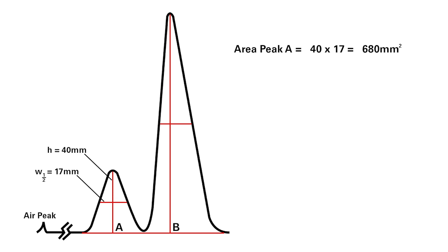Peak B is the major product. It has a height of 122 millimeters and a width at half height of 19 millimeters. The area of peak B is 2,320 millimeters squared.